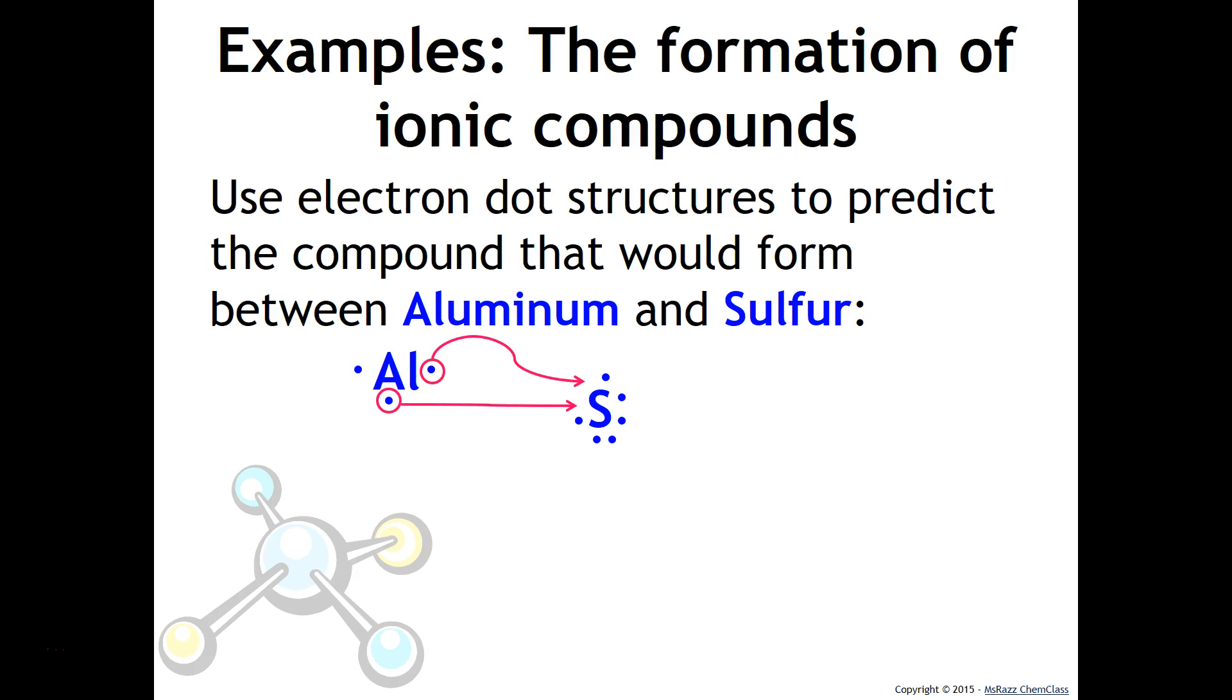However, aluminum is not. So we need to create another sulfur. Sulfur has six valence electrons. Aluminum is going to give up that electron to sulfur. But if you notice now, the sulfur is not satisfied. So we need to make another aluminum. That aluminum will have three valence electrons. It'll donate that one electron to sulfur. But then as you can see, the sulfur is now satisfied. However, aluminum is not. So then you'll have to make another sulfur with its six valence electrons and give up those two electrons to that sulfur.